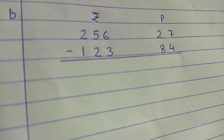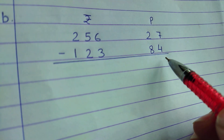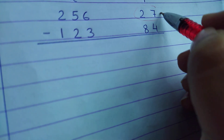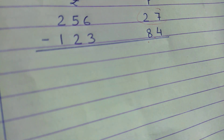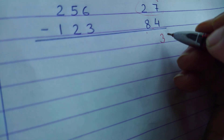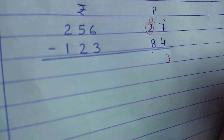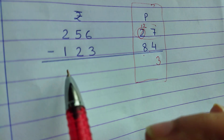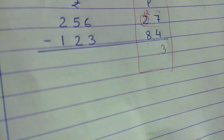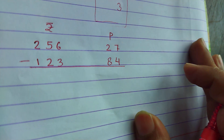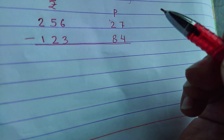Next question: Rupees 256, 27 paise minus Rupees 123, 84 paise. You have to think — 27 paise minus 84 paise is not possible because 84 is greater than 27. We cannot borrow between digits within the paise column because rupees and paise must be solved separately. So what do we do?